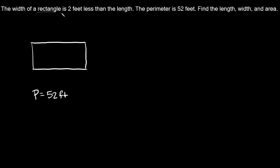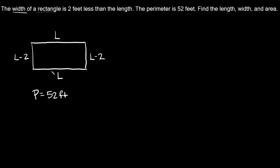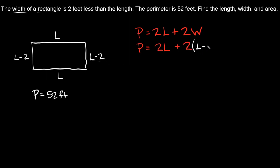It says the width of the rectangle is 2 feet less than the length. So we have a length here and a length here, and the width is the same thing as the length but 2 feet less. So we're gonna write the width as L minus 2 because the width is 2 feet less than the length, and we'll do that on both sides. Now let's set up our equation using the perimeter formula: perimeter equals 2L plus 2 times (L minus 2).